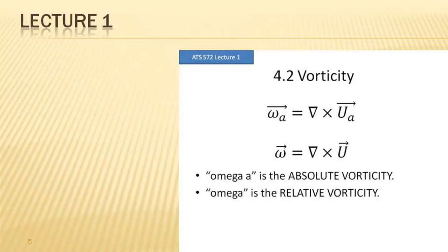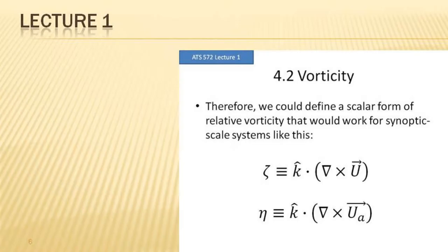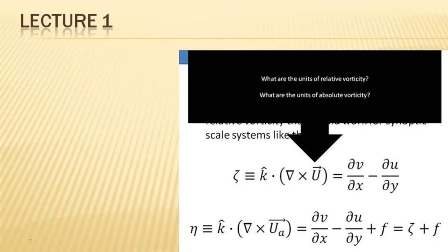In contrast to circulation, there were a couple of different ways to define vorticity. If you think of vorticity as the curl of the wind — del cross a three-dimensional wind vector, be that absolute or relative — you can get two different measures: absolute vorticity (omega_a) and relative vorticity (omega). In practice, only the vertical component tends to be what we're interested in on synoptic scales. So typically we take k-hat dot that cross product to give us our two main scalar definitions: zeta for relative vorticity, and eta for absolute vorticity. Make sure you know the units.